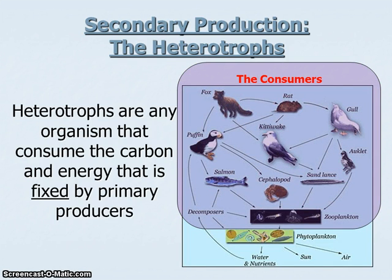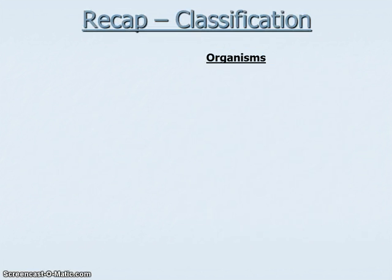Essentially, we just lump these organisms all together, and I like to call them just the consumers. They're not the producers, they're not primarily producing — they're everything else. If you're not an autotroph, you're a consumer. If you're not primarily producing, you're a secondary producer, or just a consumer. I like to recap for each of these how we classify things before I introduce new ways of classifying them.